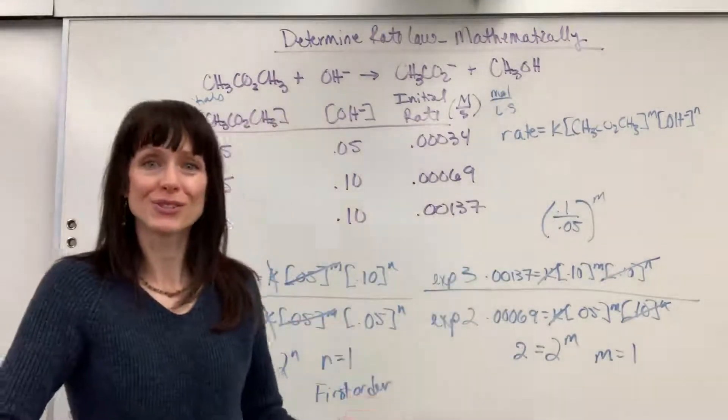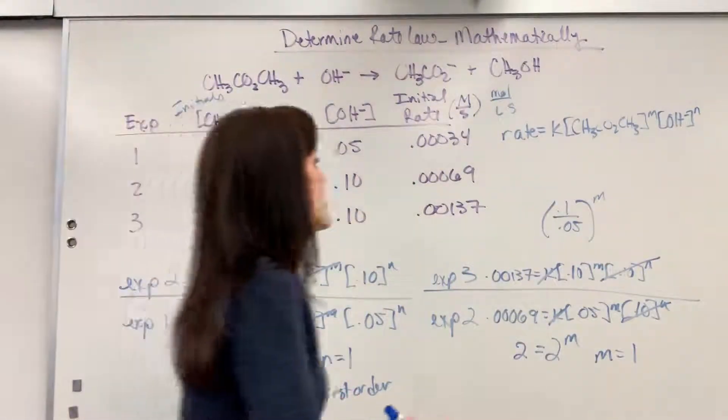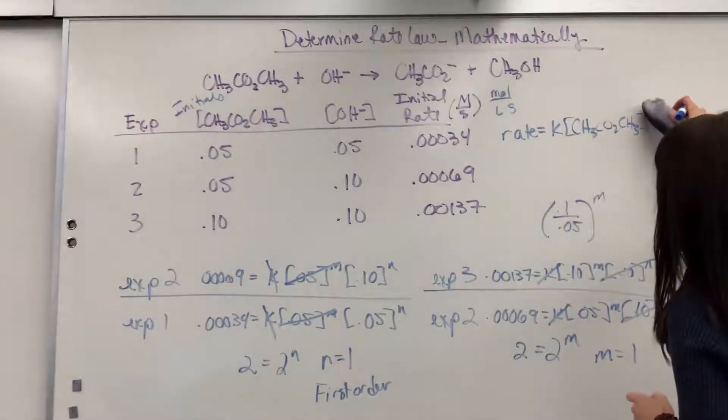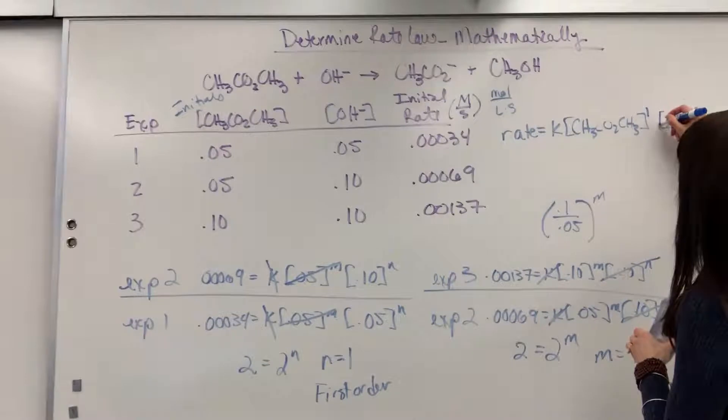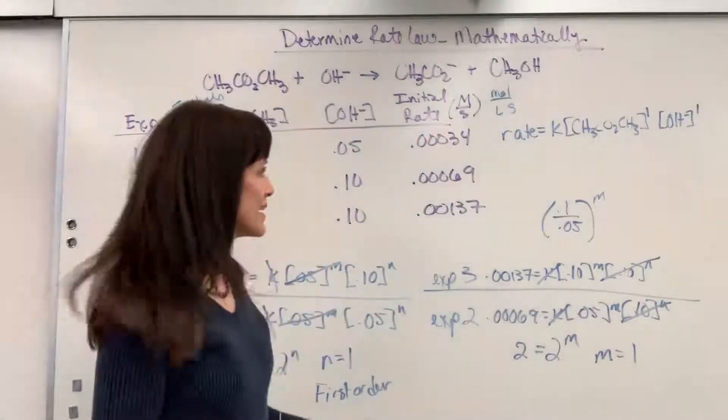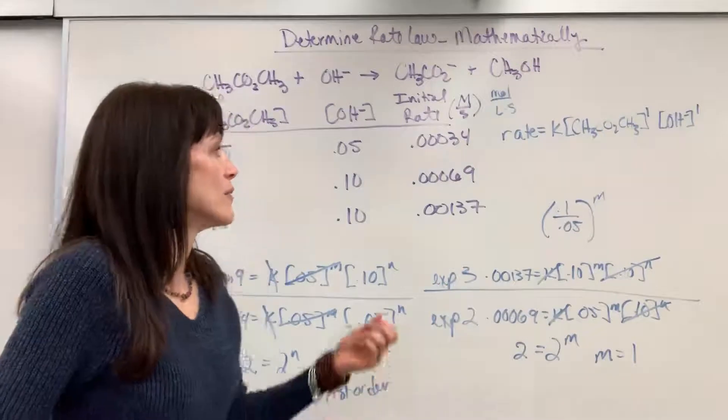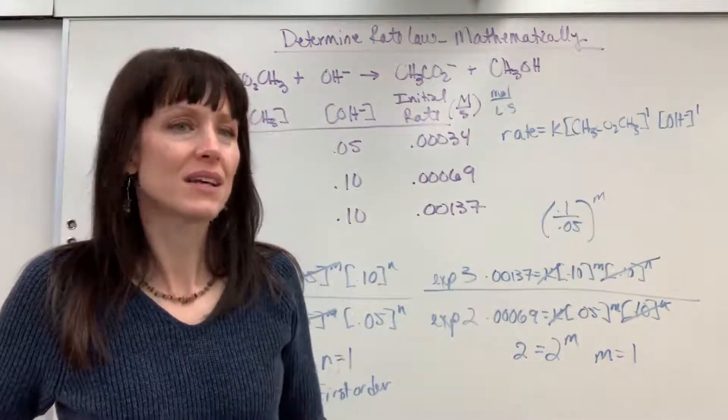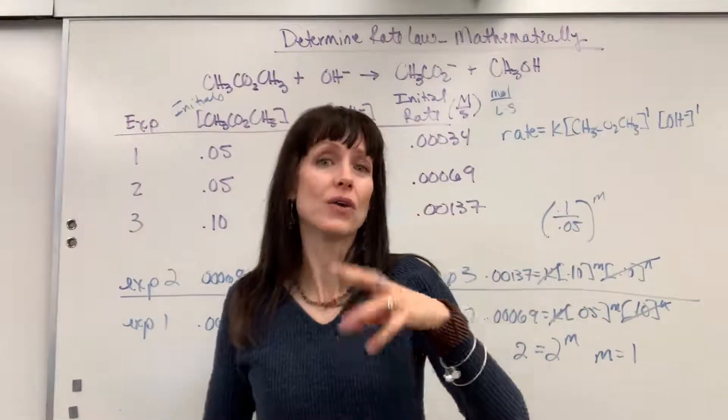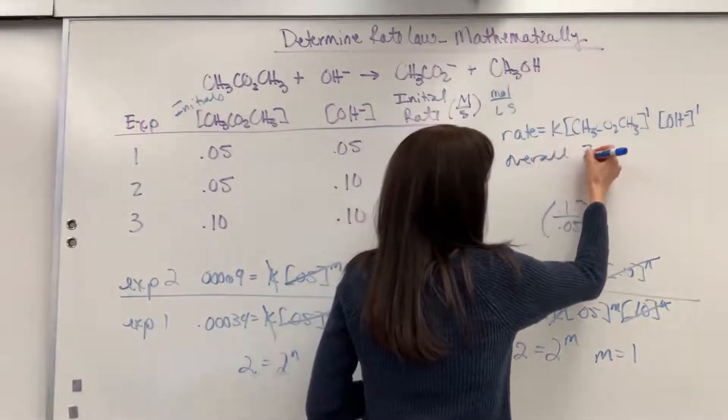M equals 1, which is also a first order. So then I can come back and rewrite my rate law. So rate is going to equal K times the concentration of methyl acetate raised to the first order times the hydroxide raised to the first order. And there is our rate law. Now remember, just a little quick review. If I wanted to know the overall rate, overall order of this rate law, you just add those orders, add the exponent. So that would be an overall second order. Let me write this down. Overall second order.